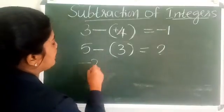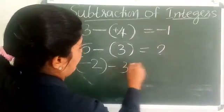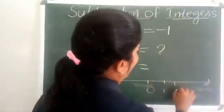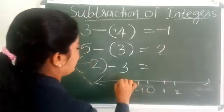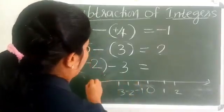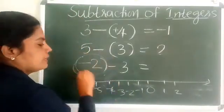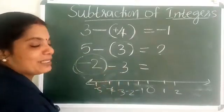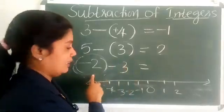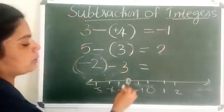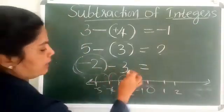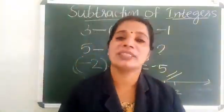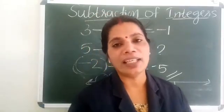Another example: minus 2 minus 3. Here, 3 is a positive integer. Draw a number line marking 0, 1, 2, minus 1, minus 2, minus 3, minus 4, minus 5. Minus 2 is a negative integer and 3 is a positive integer. Starting from minus 2, move 3 steps to the left. We get minus 5. That is, to subtract a positive integer on a number line, move to the left.